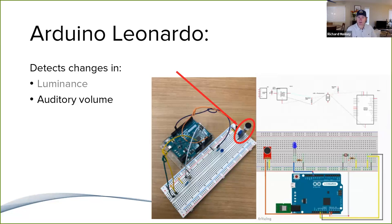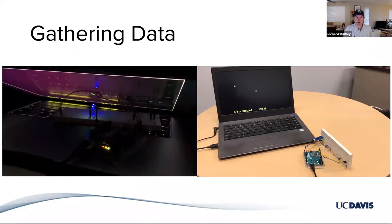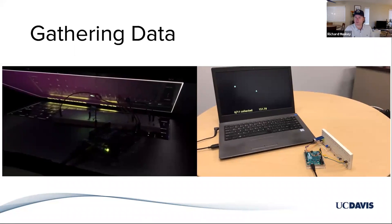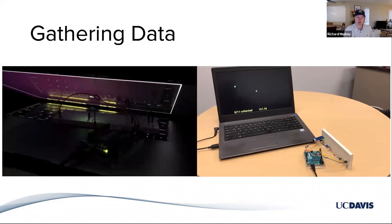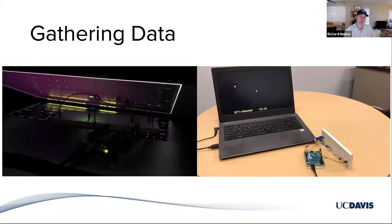We gathered some data. What you're going to see here is a video of the auditory and visual trial data collection. On the left, the screen would be black until a white flash would appear — when the white flash appeared, the Arduino would detect that change in luminance and respond with a key press, then the flash goes away. On the right, you see the Arduino set up to detect changes in sound: a tone would play, and when the Arduino picked up the change in sound, it responds with a key press and the tone stops.